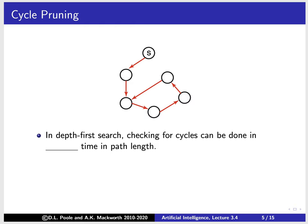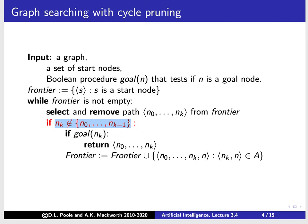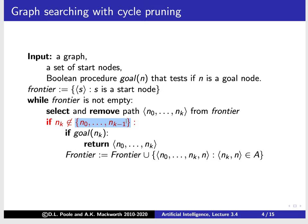Let's look at cycle pruning and depth-first search. In depth-first search, checking for cycles can be done in what time? Well, in depth-first search we're only ever maintaining a single path, with other paths being sub-parts of it. Because there's only one set, we can store it in a hash, which means we can actually do this in constant time.